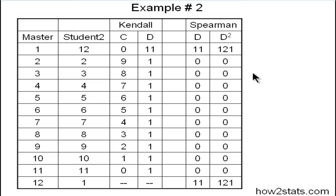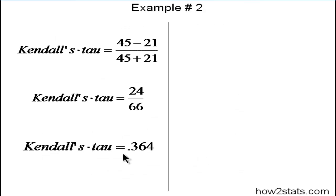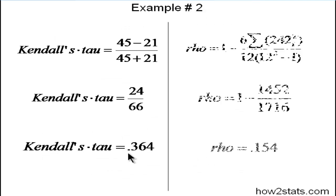You can start to think: what impact are these big deviations going to have on the formula, even though everything else is perfect? There are no deviations amongst the other 10 art exhibits, and when you square 0, you get 0. What happens is that Kendall's Tau comes out to be 0.364 in this case, and Spearman's Rho is even lower — not larger — it is lower than Kendall's Tau.